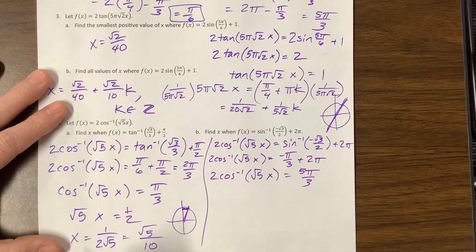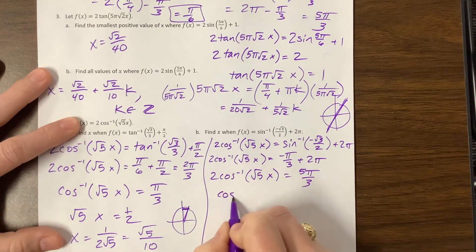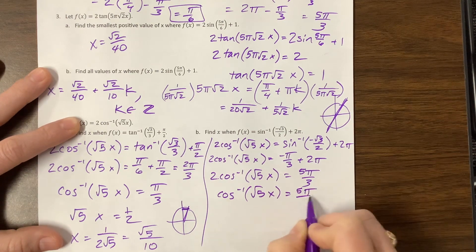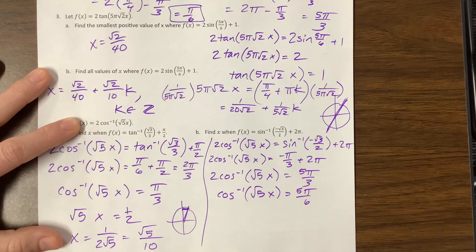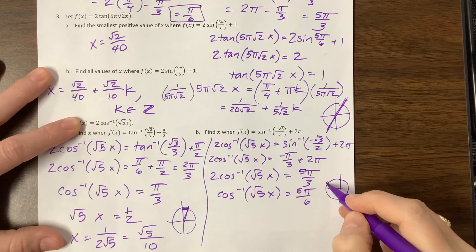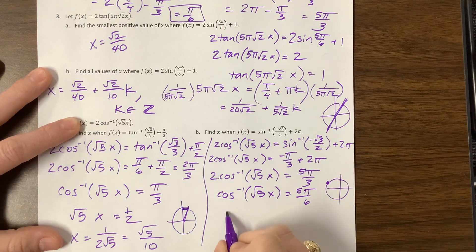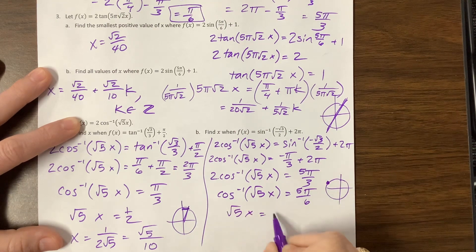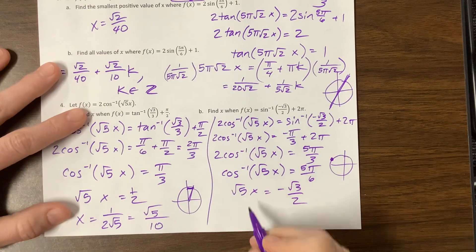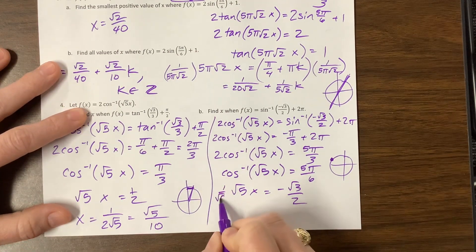And we are at 2 inverse cosine of √5x equals 5π/3. Multiply both sides by 1/2, and I get the inverse cosine of √5x equals 5π/6. Then I take the cosine of both sides, cosine of 5π/6. Where's 5π/6? It's over here. Cosine is the x. That's a negative √3/2.